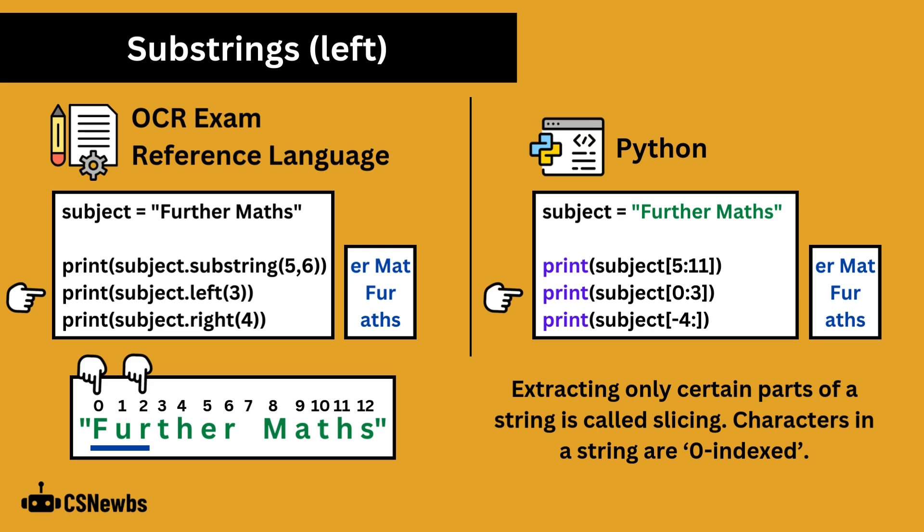The left command in OCR ERL prints a specific number of characters from the start of the string. This can be recreated in Python where the first value is zero and then the second value being the number of characters to include, as 3 will print the values in indexes 0, 1 and 2.